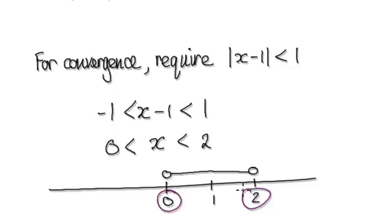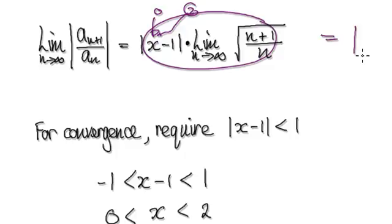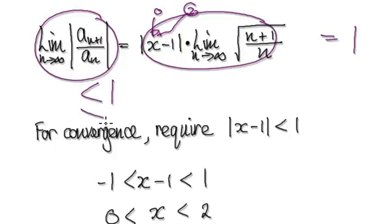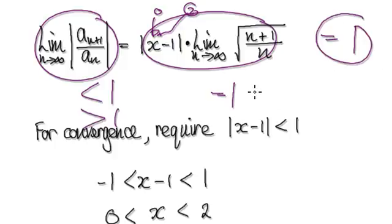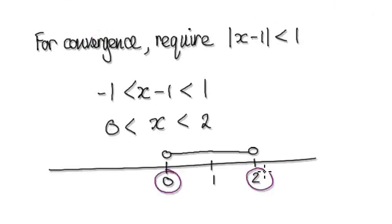But we need to check dead on x = 0 and dead on x = 2. If you put 0 or 2 into the expression, this whole thing equals 1. Remember, when the ratio test gives exactly 1, it's inconclusive. So we need to manually check what happens when x is exactly 0 and when x is exactly 2.